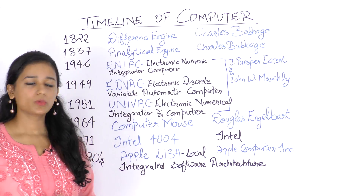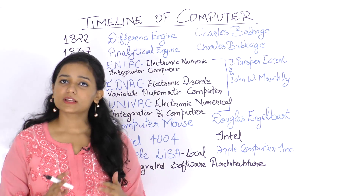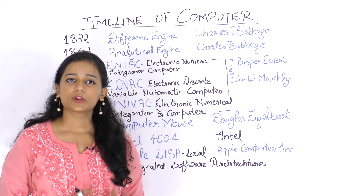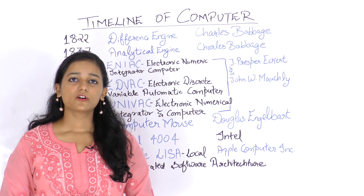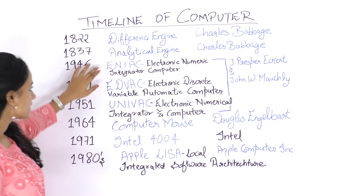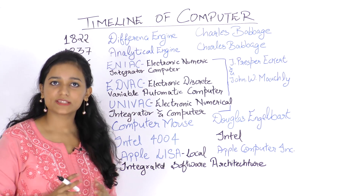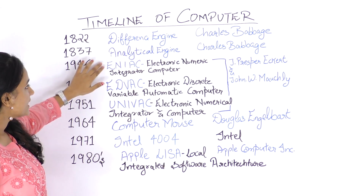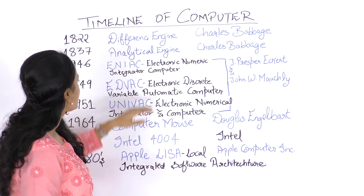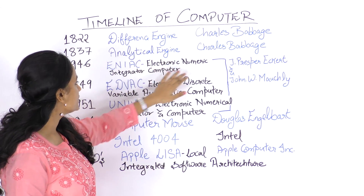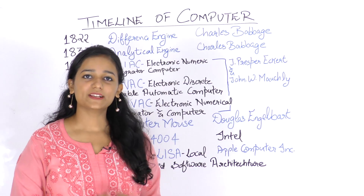You must also know the full forms of important acronyms. For example, a question may ask: what is the full form of ENIAC? The answer is Electronic Numerical Integrator and Computer.